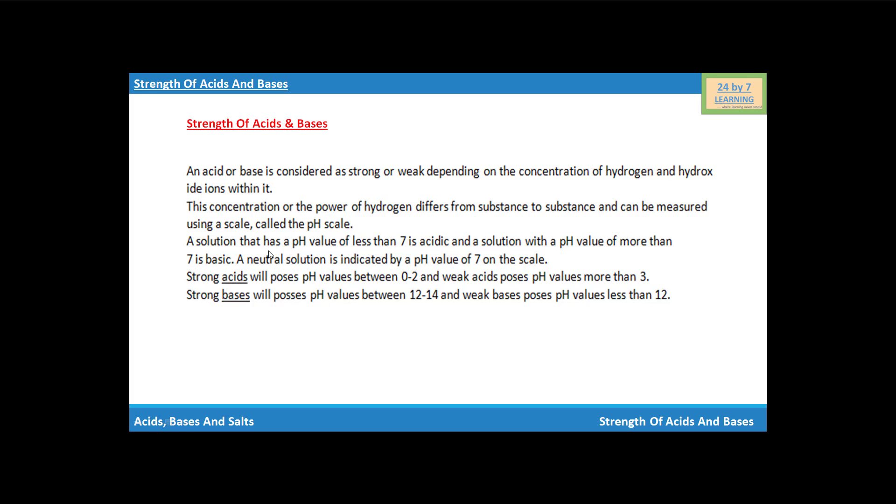A solution that has a pH value of less than 7 is acidic, and a solution with a pH value of more than 7 is basic. A neutral solution is indicated by a pH value of 7 on the scale.